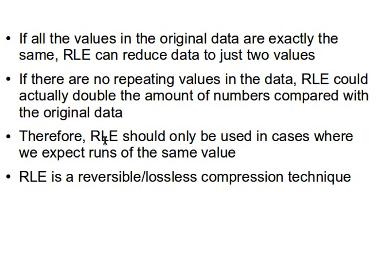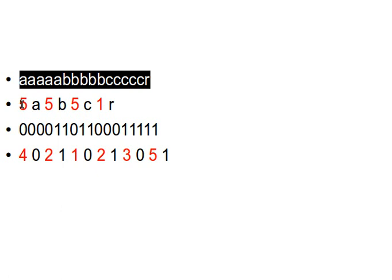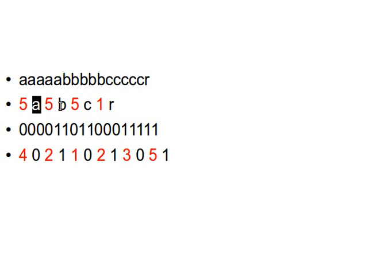Therefore, Run Length Encoding should be used only in cases where we expect runs of the same value — where we expect repetitions. The good thing about RLE is that it's reversible, or a lossless compression technique. Reversible means we can actually decode the encoded value and retrieve the original data. If you see 'five A five B five C one R', you can regenerate the original string by looping five times for A, five times for B, five times for C, and once for R. Getting the original data is extremely easy.